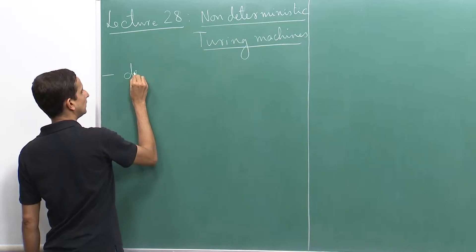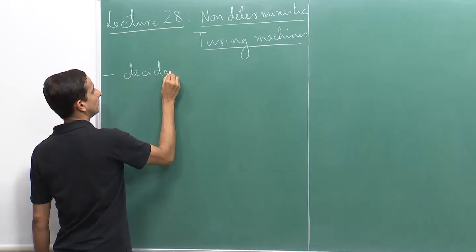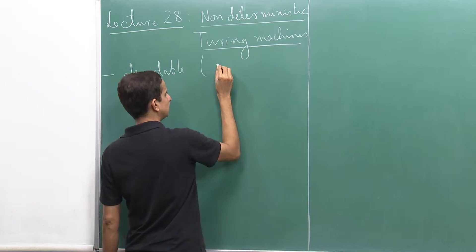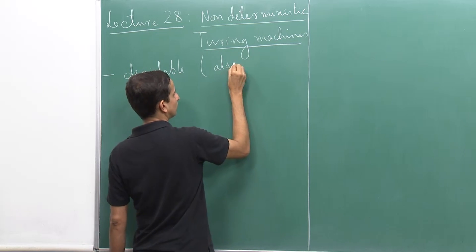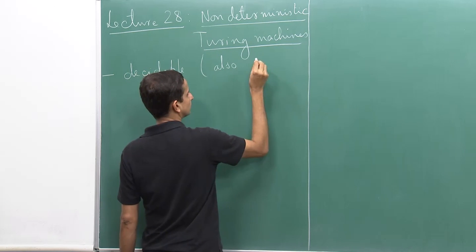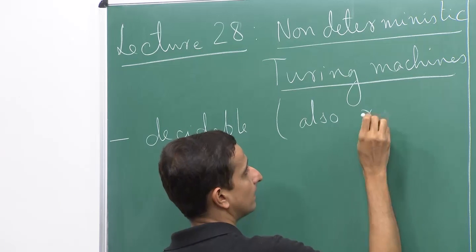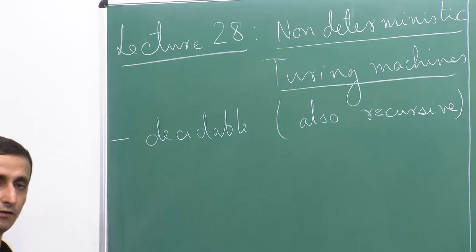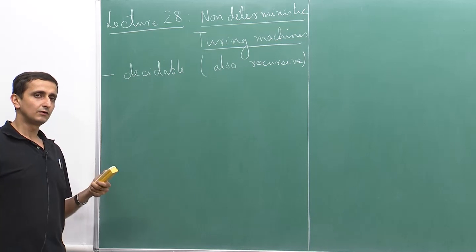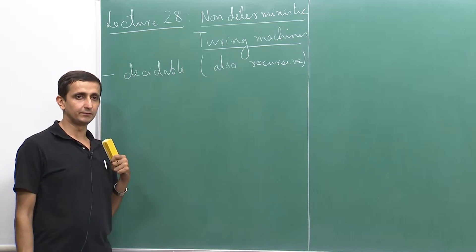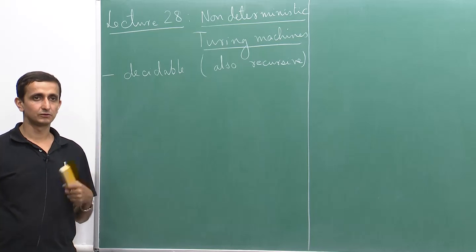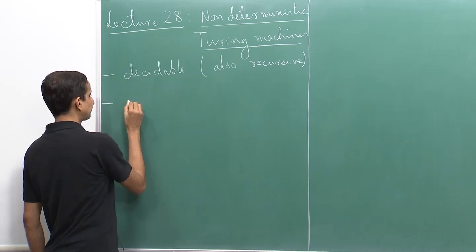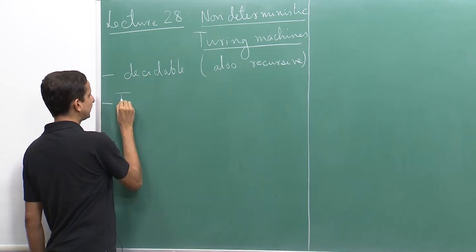We have the class of all decidable languages, also known as recursive languages. Decidable languages are those languages for which there is a halting Turing machine that accepts that language. A superclass of decidable languages are what are known as Turing recognizable languages.